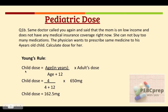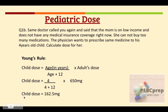In Young's rule, the formula is: child dose equals age in years multiplied by adult dose, divided by age plus 12. Putting in the values: 4 divided by (4 + 12), multiplied by 650 milligrams. This gives 162.5. Remember, if the decimal value after the point is 50 or more, we round up to 163. So the dose given to the child is 163 milligrams.